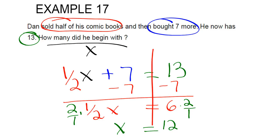Our real world problem has real world units. How many did he have? Well, we're talking about comic books. So the final answer is he had 12 comic books.